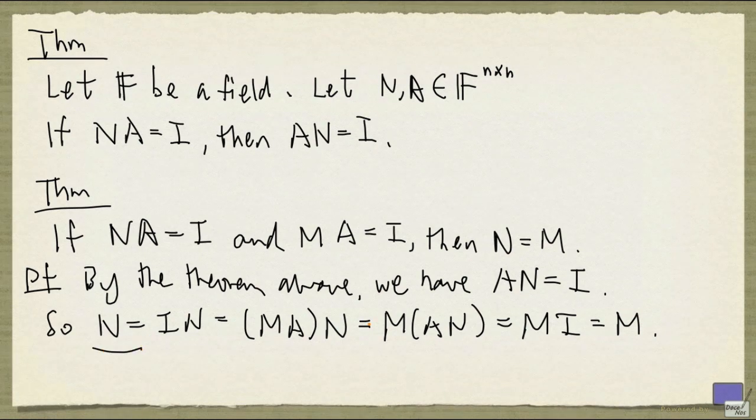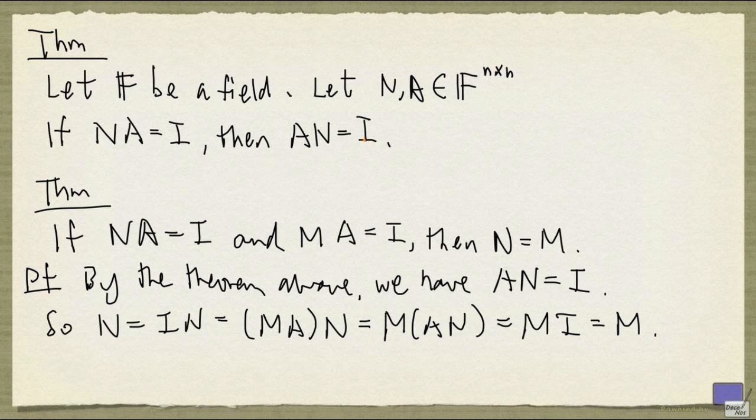So if you read from the left to the right, you'll see that N is equal to M. So the left inverse of a matrix is unique.